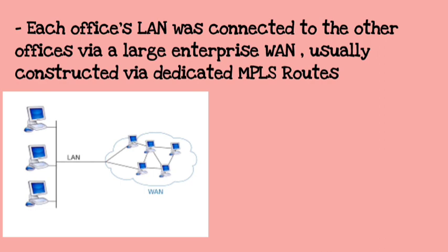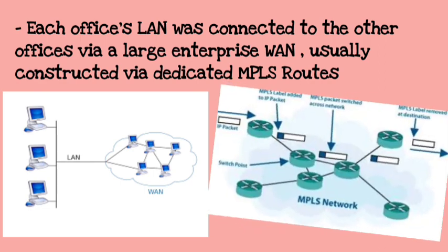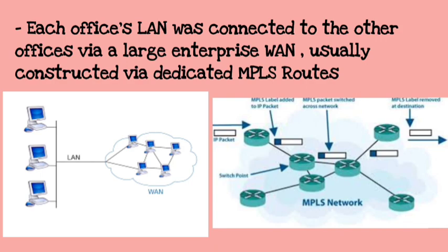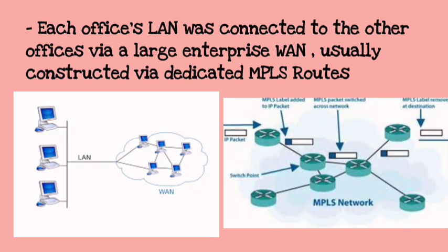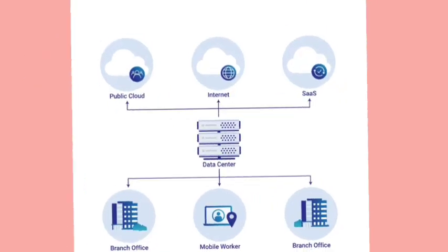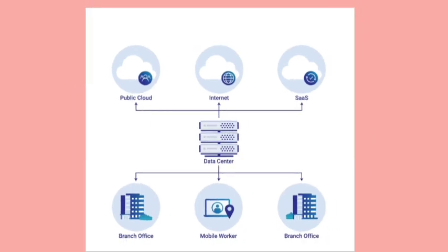The WAN is usually constructed with the help of MPLS — Multiple Protocol Label Switching. This is our structure. In this figure, here is public cloud, internet, Software as a Service, and a data center.